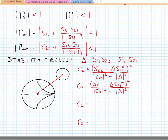Here we found the distance from the center of the Smith chart to the center of the stability circle. This distance would be either C_L or C_S, and then we can find the radius of the stability circle.